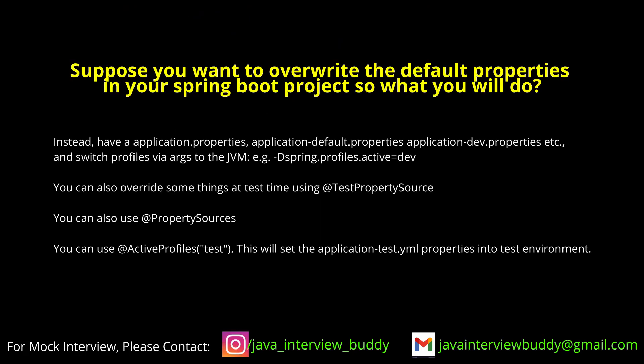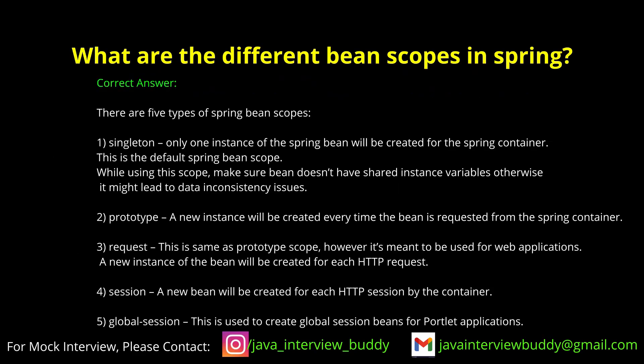Suppose you want to override default properties in your Spring Boot project — what will you do? If Spring doesn't provide a way to configure it, there are ways you can configure different properties by extending certain classes. If that is not possible, you can stop the auto-configuration from Spring so it won't configure it, and you need to configure them manually yourself.